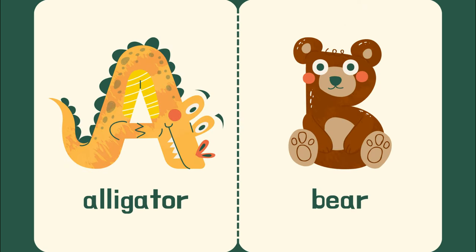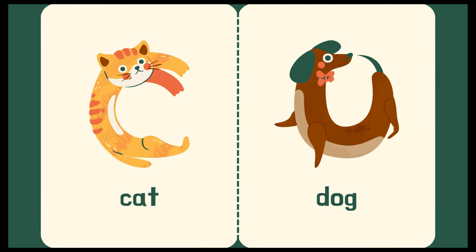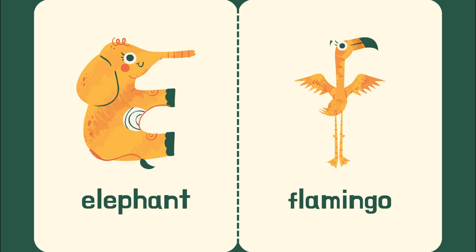A is for alligator. B is for bear. C is for cat. D is for dog. E is for elephant.